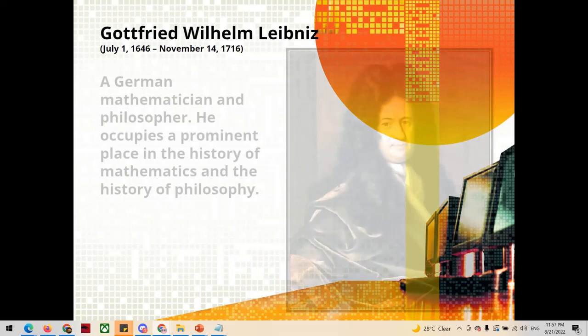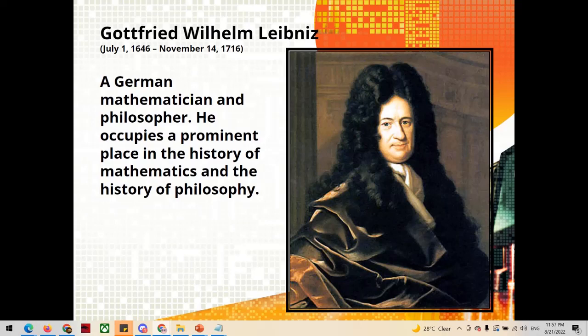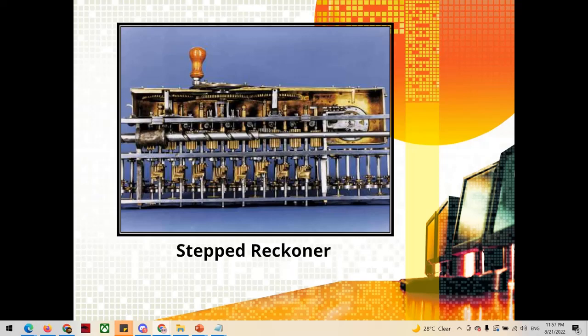Next is Gottfried Wilhelm Leibniz. Leibniz is a German mathematician and philosopher. However, he occupies a prominent place in the history of mathematics and history of philosophy. He invented the Stepped Reckoner, a digital mechanical calculator, in 1672 and completed the device in 1694. This device managed four functions: addition, subtraction, multiplication, and division. The calculator he called the Stepped Reckoner.